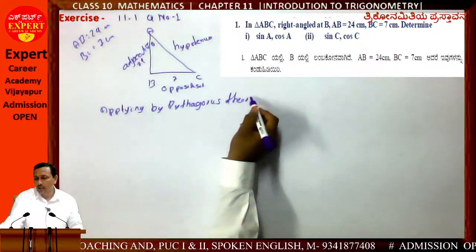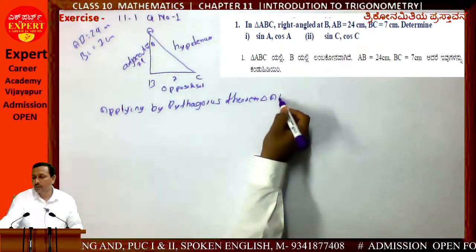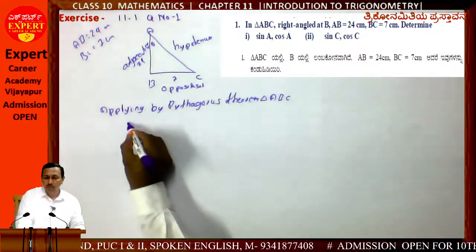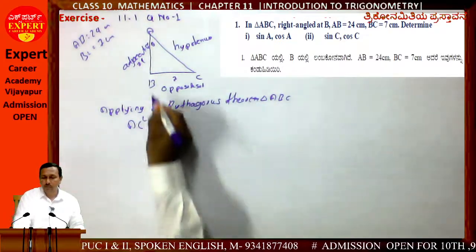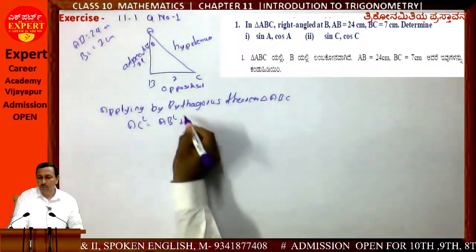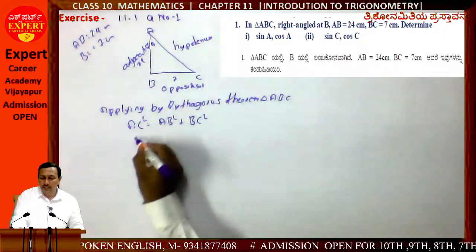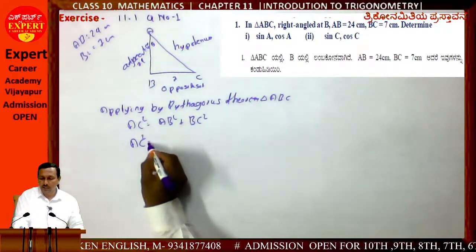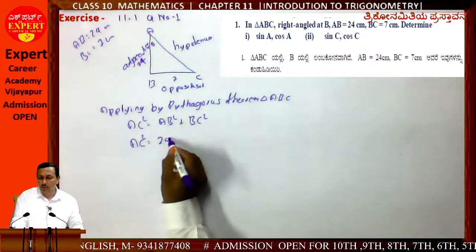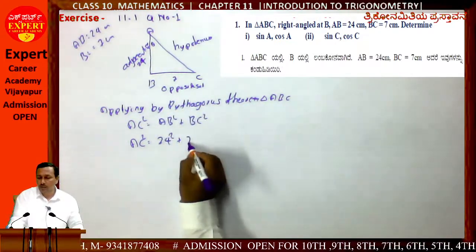By Pythagoras Theorem in triangle ABC: AC² = AB² + BC². Substituting the values: AC² = 24² + 7².